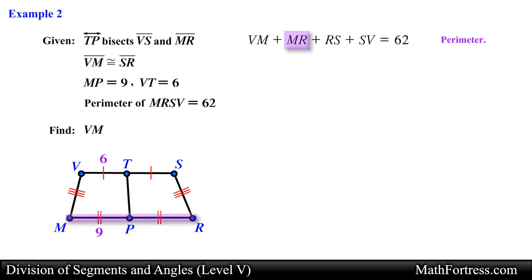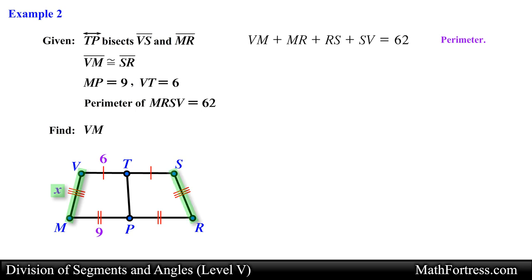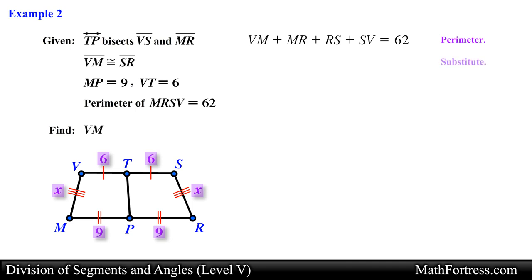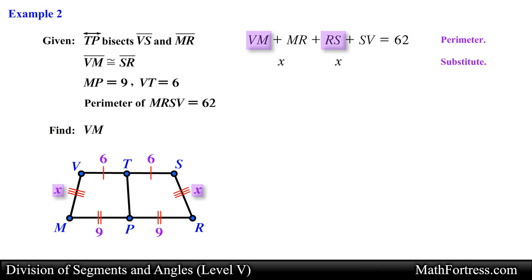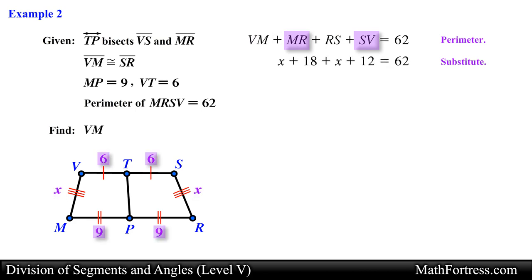The perimeter expression is: segment VM plus segment MR plus segment RS plus segment SV equals 62. We assign the variable x to the length of segment VM. Since segment SR is congruent to segment VM, we also label that length x. The length of segment PR equals 9 since it is congruent to segment MP, and the length of segment TS equals 6 since it is congruent to segment VT. We substitute into the perimeter expression, replacing VM and SR with x, and VS and MR with 12 and 18 respectively.